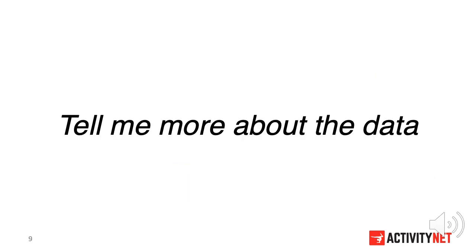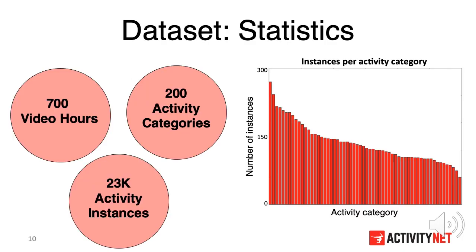Before talking about the challenge results, I would like to share some statistics of our dataset. The ActivityNet version 1.3 dataset contains 700 hours of video. Those videos record human activity from 200 activity categories, and we have a total of 23,000 activity instances in the dataset.